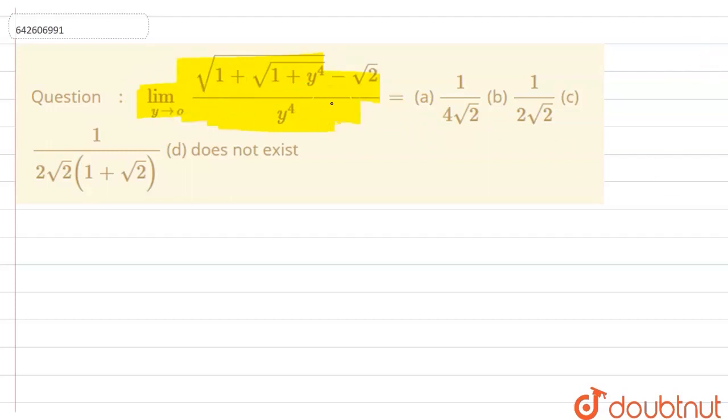Let us rationalize this. Rationalizing this, we can write that limit y tending to 0. The denominator will be y⁴ and this will be √(1 + √(1 + y²)). Since it is minus here, we will multiply with root plus.